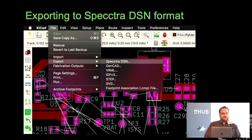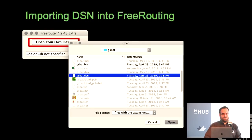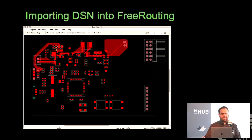In KiCad, to get the file out to the autorouter, use the export to Spectra DSN option. It's a super old format, but it's used by everything because it's the most standard we have. You export a DSN file, and then in FreeRouting when you open it you just get a window with one button — pretty easy to figure out what to do. You click the big button, open your DSN file, and now it's in FreeRouting.